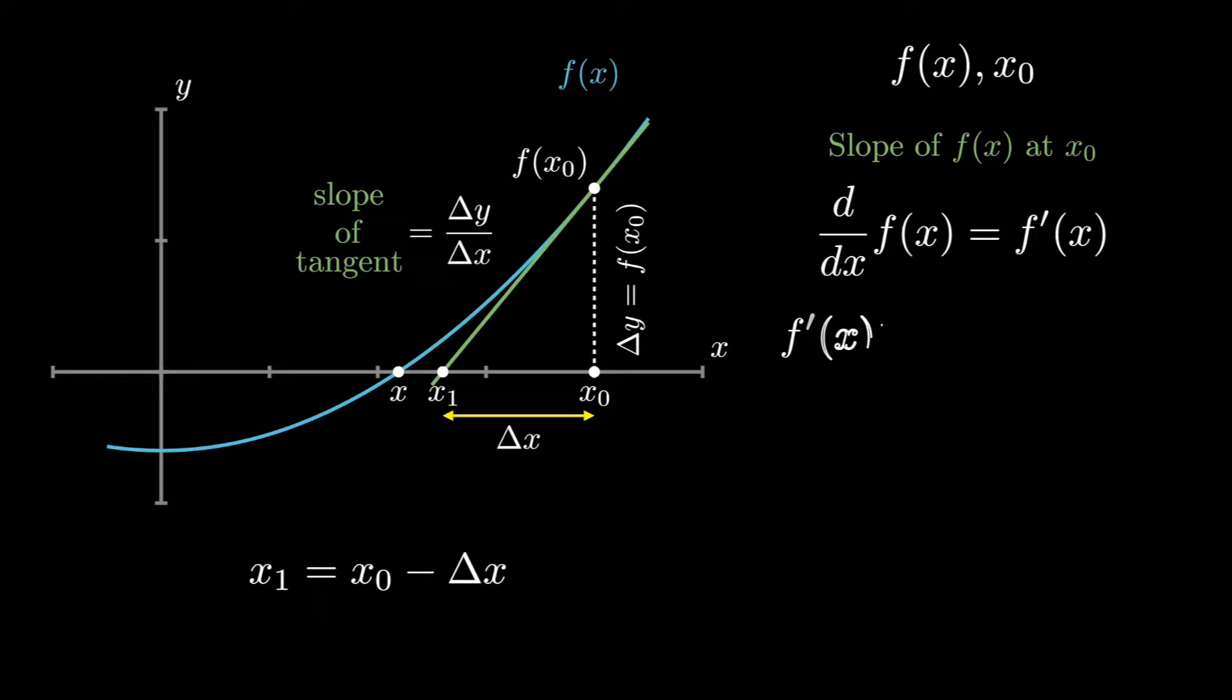Substituting x_0 in place of x, we will get f'(x_0). That is, slope of the curve at x_0 and slope of the tangent line.